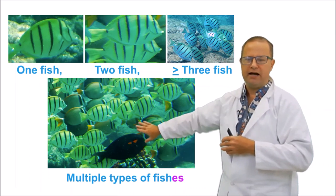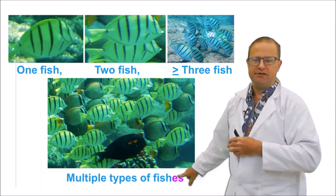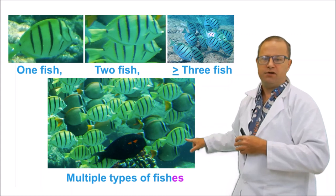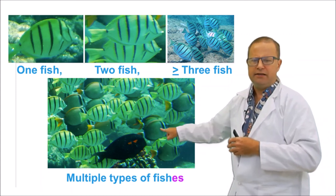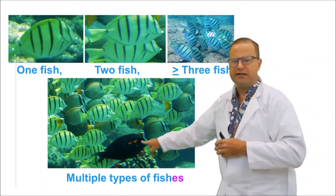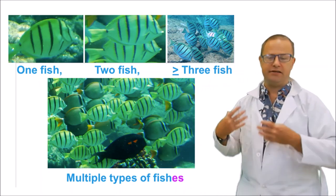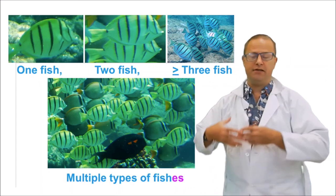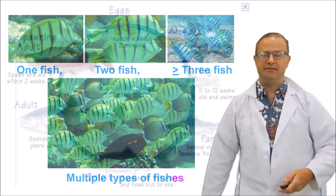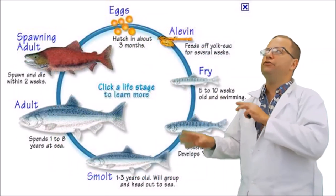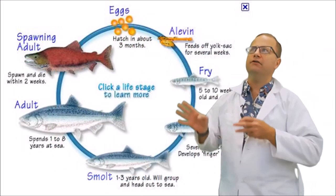But when we're talking about more than one species or more than one kind, we say these are multiple types of fishes. So here's one species, that's a Manini, there's another one, that's Acanthurus cteatus and that's olivaceus. So we've got three different species, so we'd say there's three species of fishes.